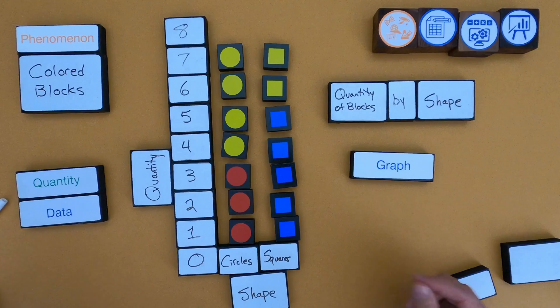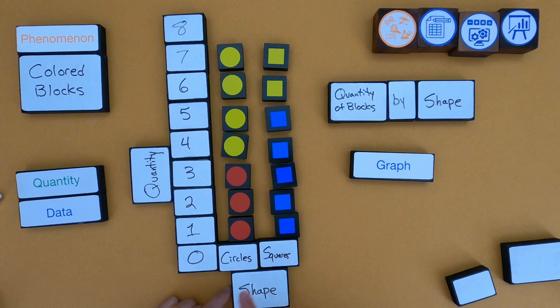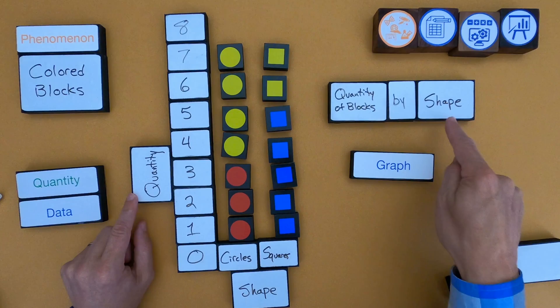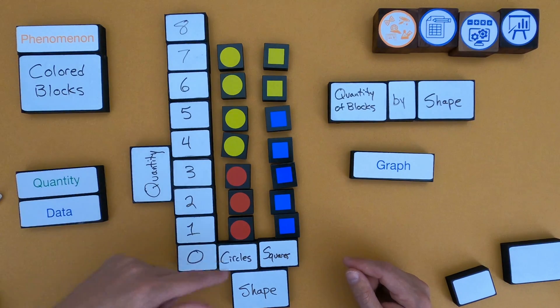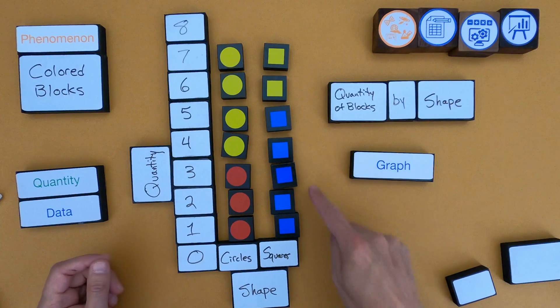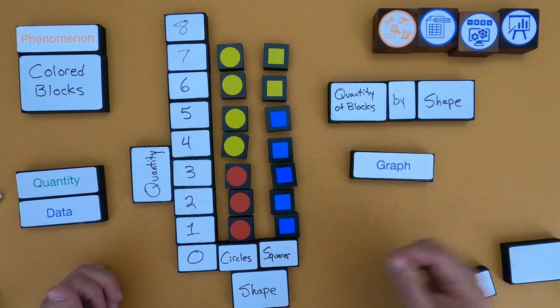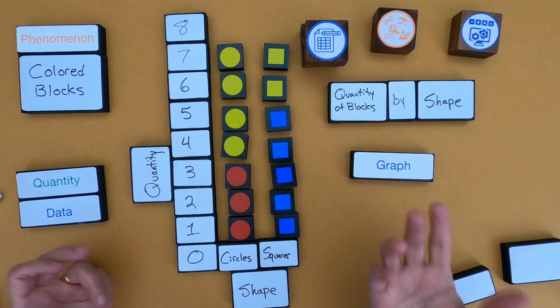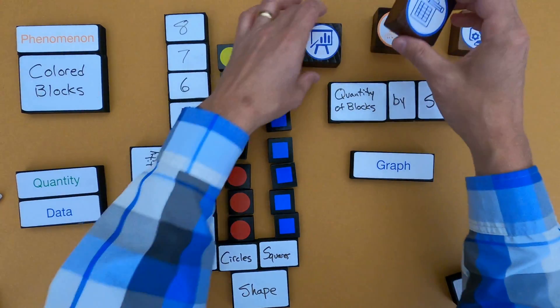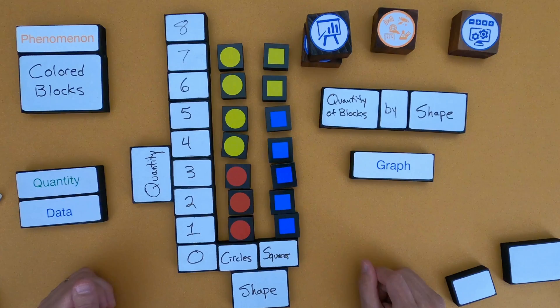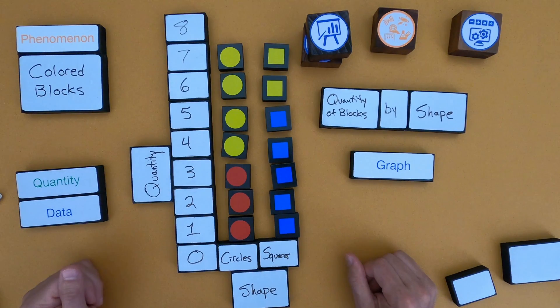Okay, so in this next graph what I have is I have the shape on the x-axis and quantity on the y. And my graph is quantity of blocks by shape. So I could read it across. So I have seven of the circles and I have seven of the squares. So I could now go from a graph back to a data set, or I could go from a data set to a graph. And so that's how you do mathematical thinking. What I'm going to do is clean this up and I'm going to give you a chance to create some data sets and graphs of your own.